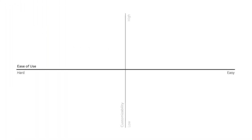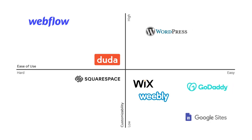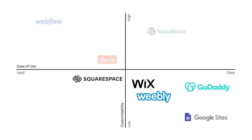If we take these two considerations and make a simple graph with an easy-to-use axis and a customizability axis, we can actually see where these different tools fall into place. As you can see, while some of the tools offered by GoDaddy, Weebly, Wix, Squarespace, and Google Sites are easy to use, they don't offer a ton of customizability. These are tools I like to call template-based tools, where you can pick from a predefined template that lets you customize the colors, fonts, and some of the layout, but much of the overall look and feel is fixed according to that template.